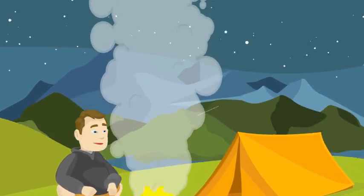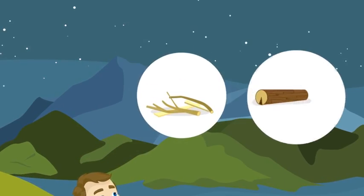When you build a campfire there are three types of fuel that you can use: kindling, logs, and coal.